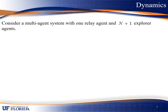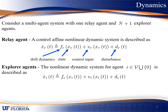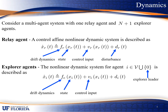For the dynamics used to model our system, we consider a model with one relay agent and n plus 1 explorer agents. For the relay agent, we use this control-affine nonlinear dynamic system, where F_R denotes the drift dynamics, V_R denotes the control input, and D_R denotes the disturbance. Similarly for the explorer agents, where 0 denotes the explorer leader, F_E denotes the drift dynamics, X_I denotes the true state, V_I denotes the control input, and D_I denotes the disturbance acting on the system.